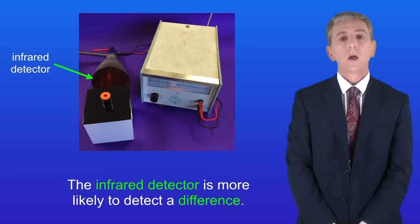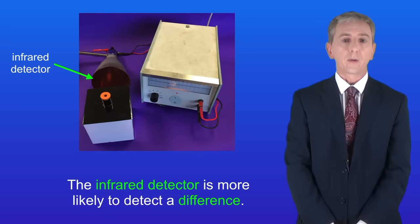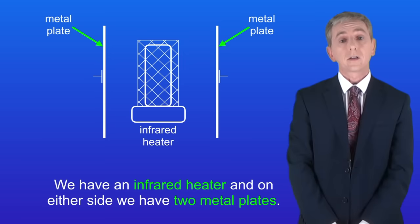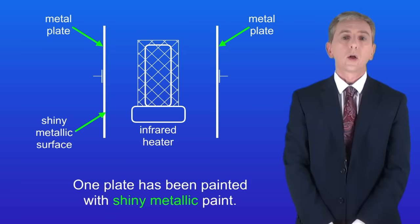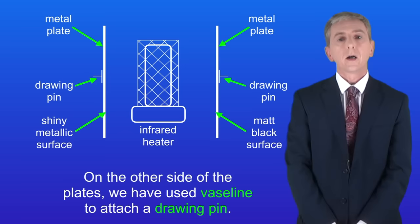Now we'll look at how to measure the absorbance of infrared by different surfaces. We have an infrared heater with two metal plates on either side: one plate painted with shiny metallic paint and the other with matte black paint. On the other side of the plates, Vaseline has been used to attach a drawing pin.